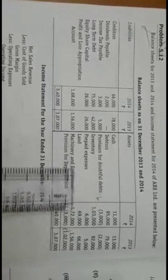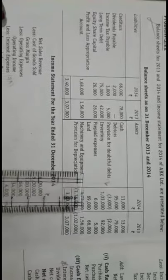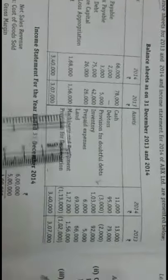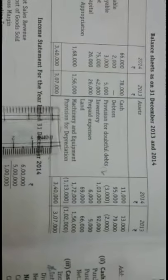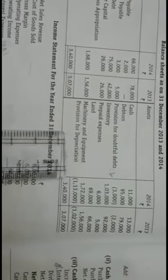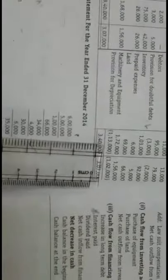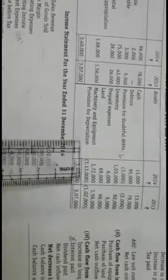For the land account, previous year is Rs. 66,000 and current year is Rs. 69,000 — an increase in land by Rs. 3,000, shown under investing activity as purchase of land Rs. 3,000. The machinery and equipment account ledger has already been prepared. For the provision for depreciation account, opening balance is Rs. 20,000 and closing balance is Rs. 10,000 — the difference is shown as depreciation of Rs. 11,000.